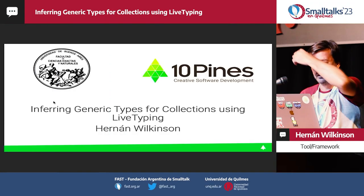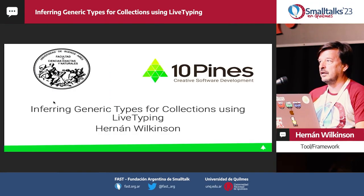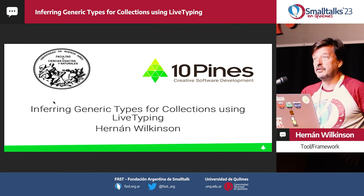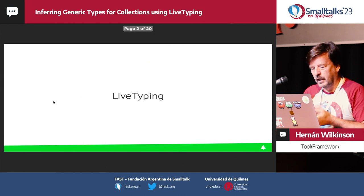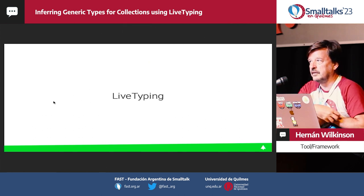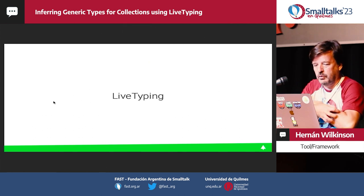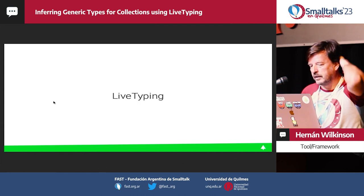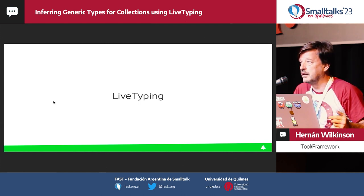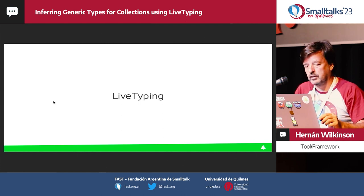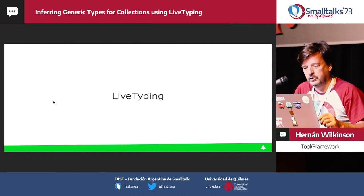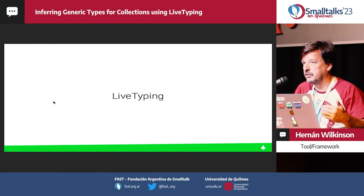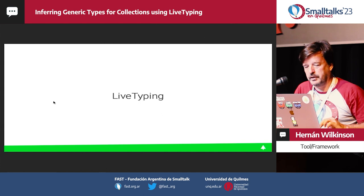I'm at Wilkinson. I'm going to talk about inferring generic types for collections and other kinds of generic classes using live typing. Live typing is a technique that we implemented on Squeak that collects type information while the system is running. We made a modification to the VM and also to the tools of Squeak to take advantage of that type information, like when doing refactorings, when looking for senders and implementers.